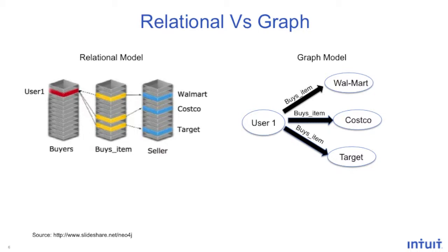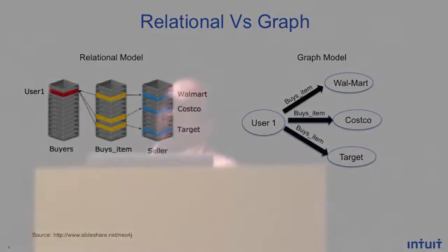Every node has properties. For example, for a user node we have attributes like name, address, and other details. Similarly, for a merchant node we have the name of the merchant, location, and contact details. The relationship that exists is a user buys an item or shops at a particular merchant, and we can see how it is represented on the right-hand side. My colleague Neha will dive deeper into representing financial transactions using graph databases, and for the graph DB we are primarily using Neo4j.